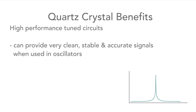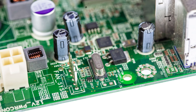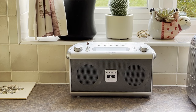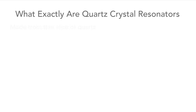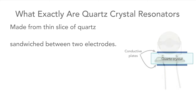Levels of this order mean that quartz crystals are able to provide very high performance tuned circuits, giving very clean, stable and high accuracy signals when used in oscillator circuits, and very sharp responses to reject unwanted signals when used in filters. Here we see a quartz crystal used on a computer board, and here's another crystal used in a home-built low-power transmitter, but they can be found in many other electronics items as well — from domestic radios and televisions to high-end professional equipment of all sorts. The crystals themselves consist of a thin slice of quartz sandwiched between two electrodes that provide the electrical link.